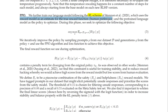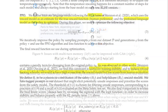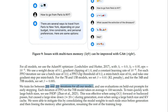They further trained the language model following the RL scheme, which uses the reward model as an estimate for the true reward function and the pre-trained language model as the policy to optimize. They find this constraint is useful for training stability and to reduce reward hacking, whereby the model would achieve high scores from the reward model but low scores from human evaluation. They train for between 200 and 400 iterations for all models, using evaluations on held-out prompts for early stopping.